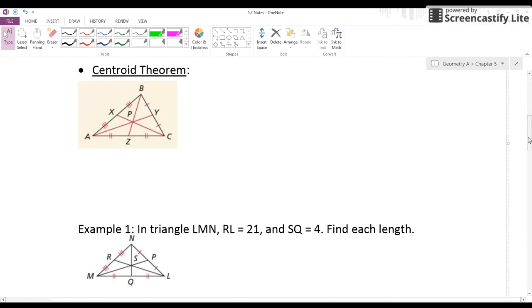Connected to centroid is what we call the centroid theorem. This point of concurrency gives us more information about segments, about things going on in this triangle. The centroid theorem says that the centroid of a triangle is located two-thirds of the distance away from each vertex to the midpoint of the opposite side. I think this actually makes more sense when you look at the equation.